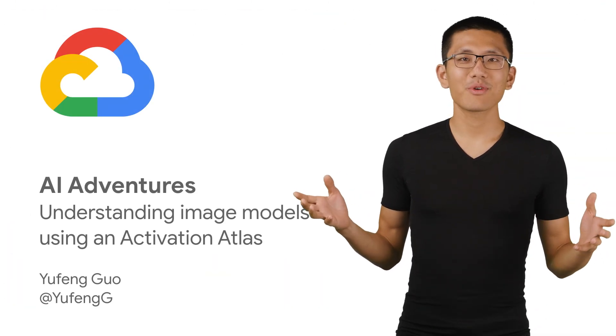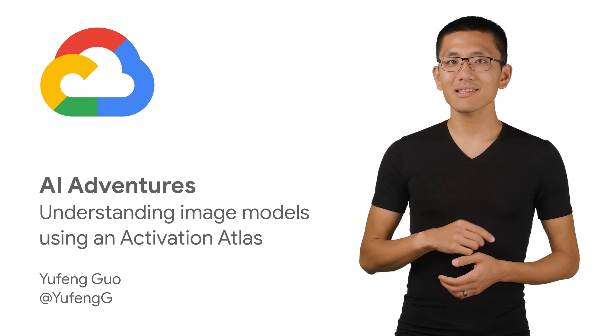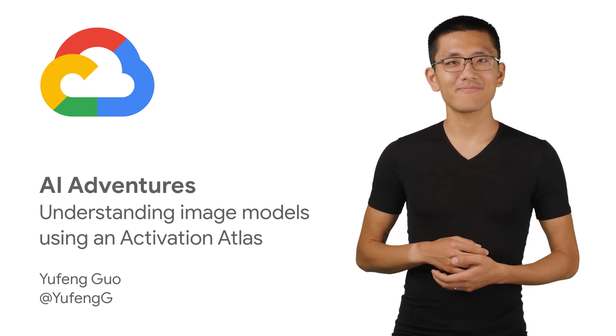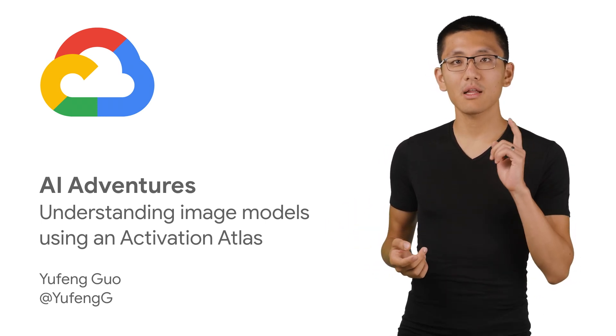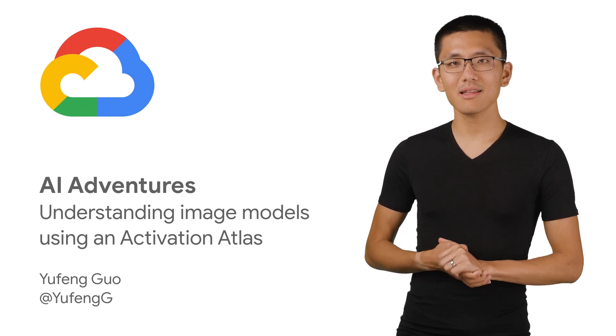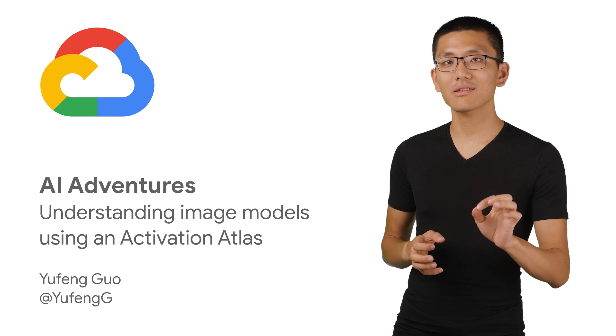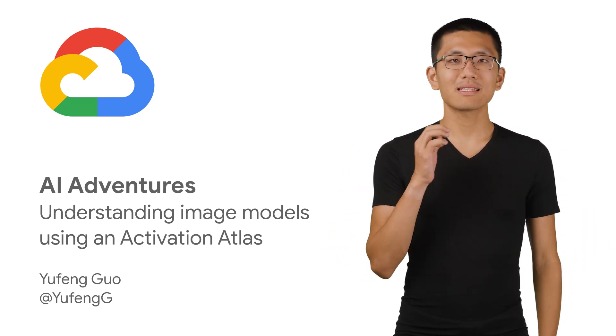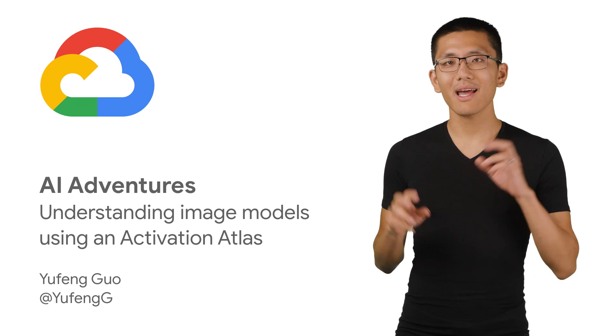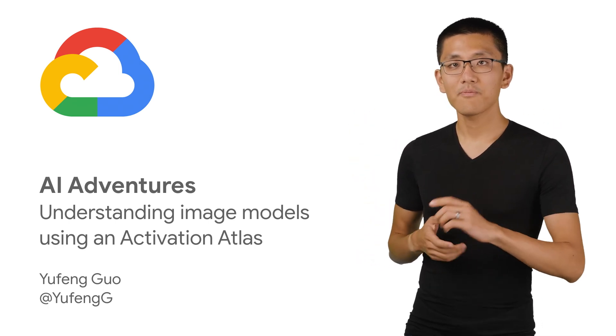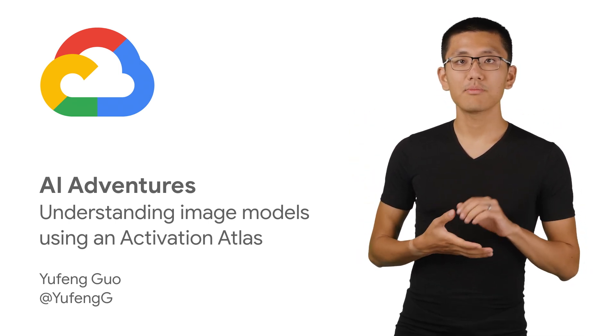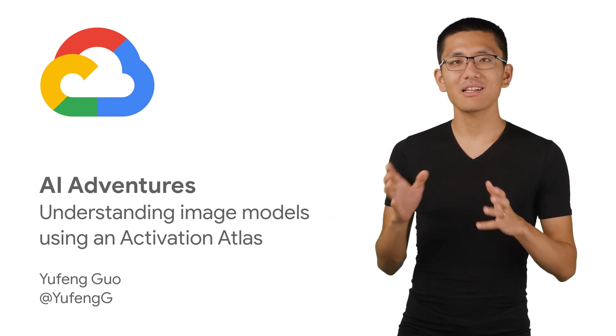Welcome to AI Adventures, where we explore the art, science, and tools of machine learning. My name is Yufeng Guo, and on this episode, we're going to extend the ideas of feature activations in convolutional neural networks even further by applying them to entire images to create activation grids, and then see how we can use that to produce an activation atlas.